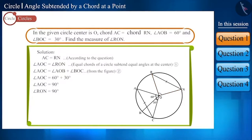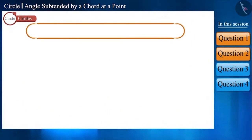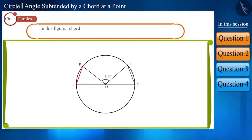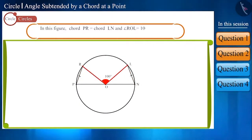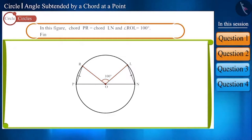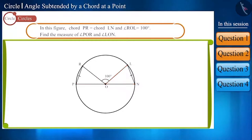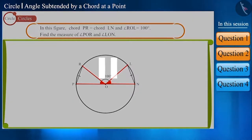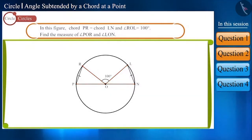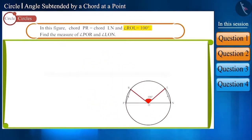Let's move to our next question. In the given figure, chords PR and LN are equal and angle ROL measures 100 degrees. Find the measure of angle POR and angle LON. You can find the solution by pausing the video. Look at the figure carefully — we are given that angle ROL measures 100 degrees.